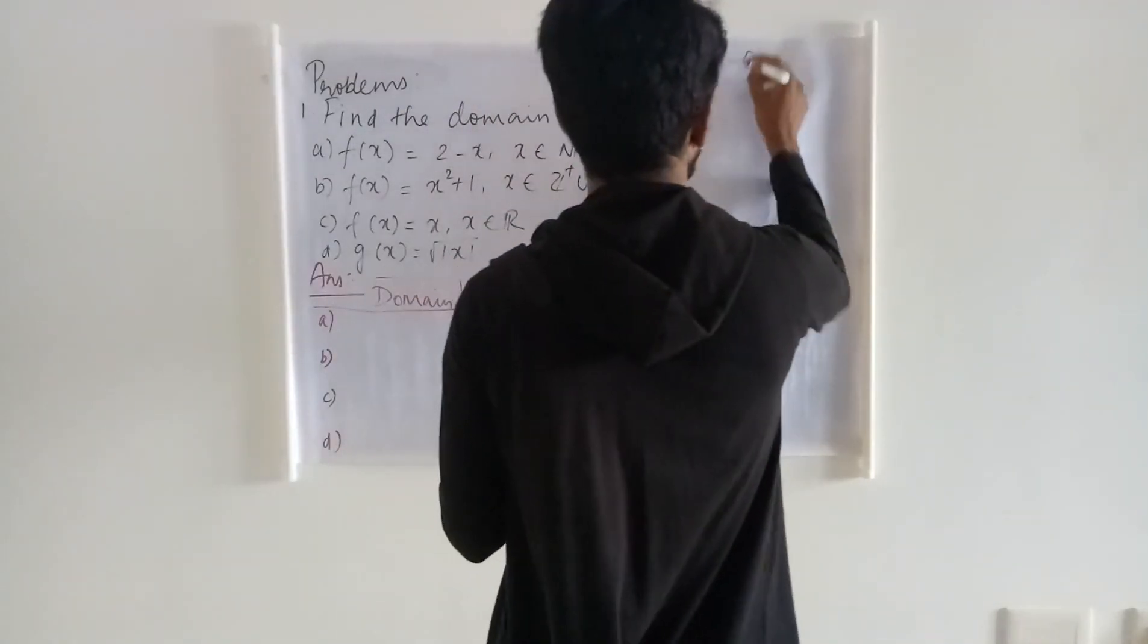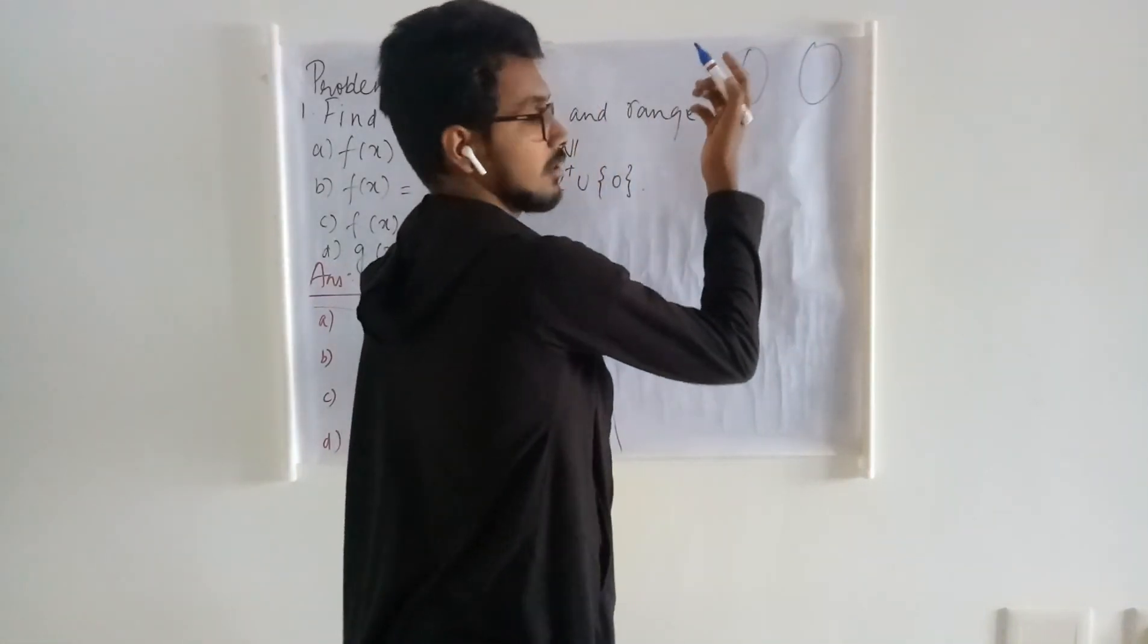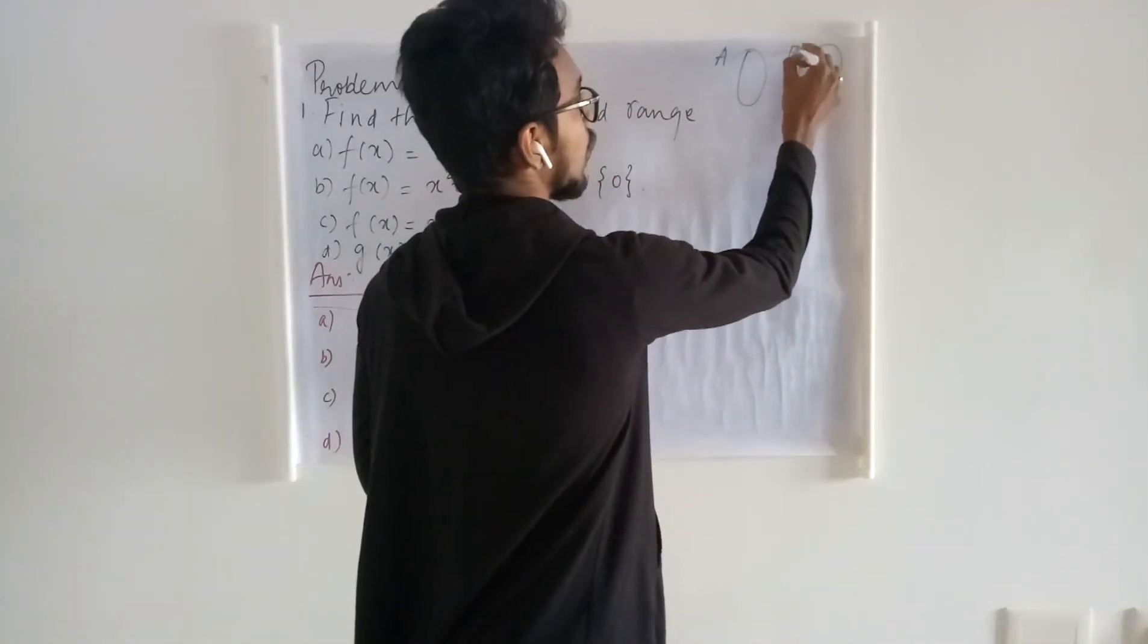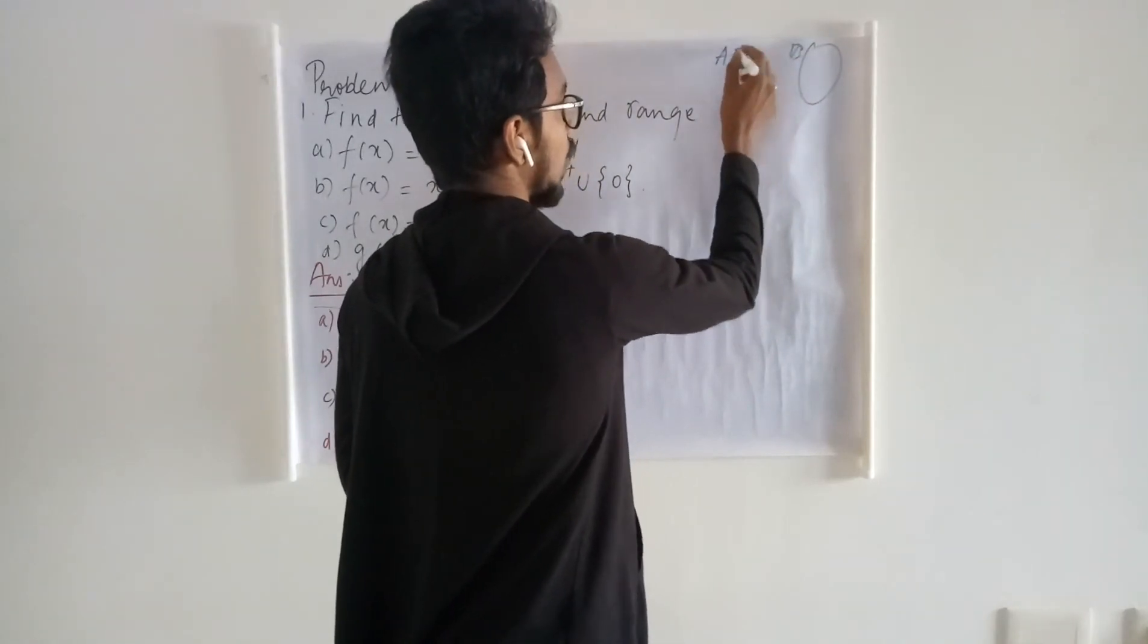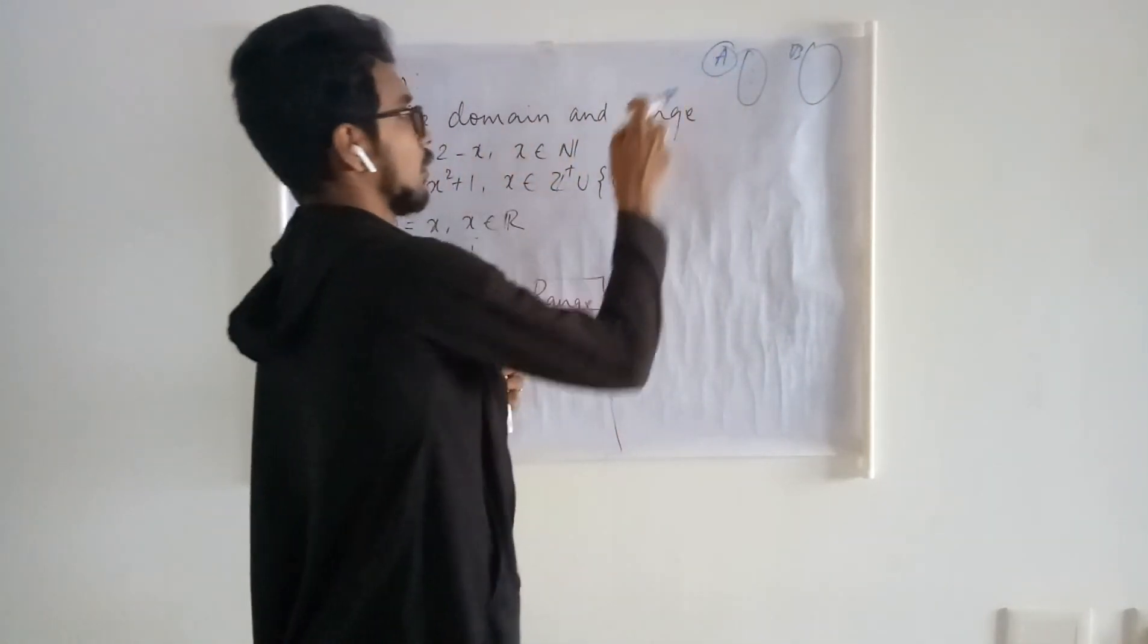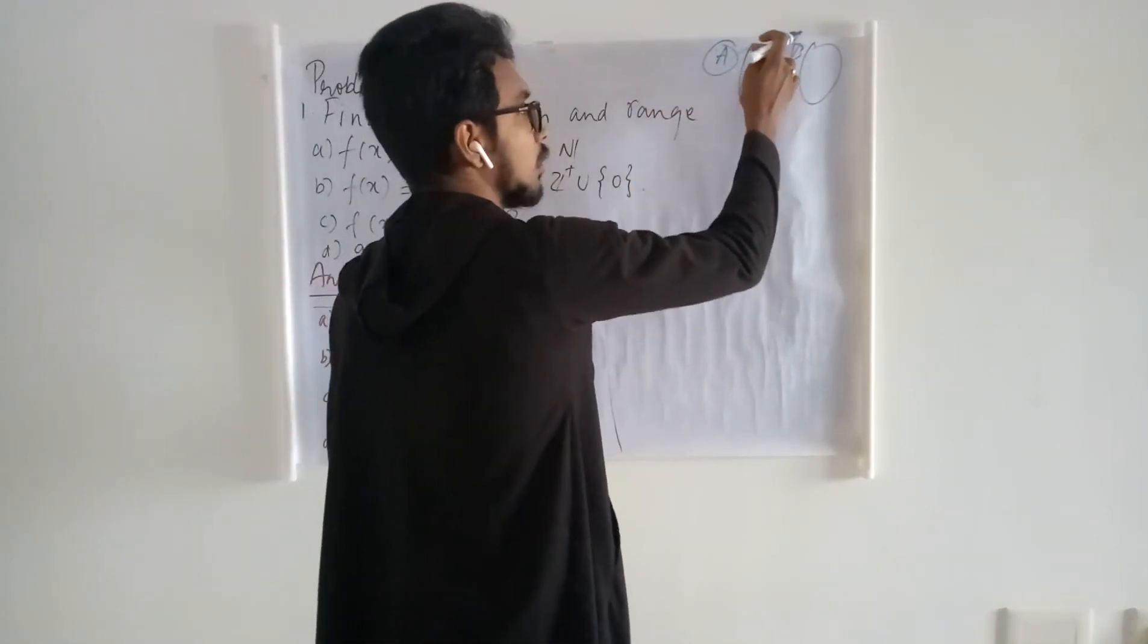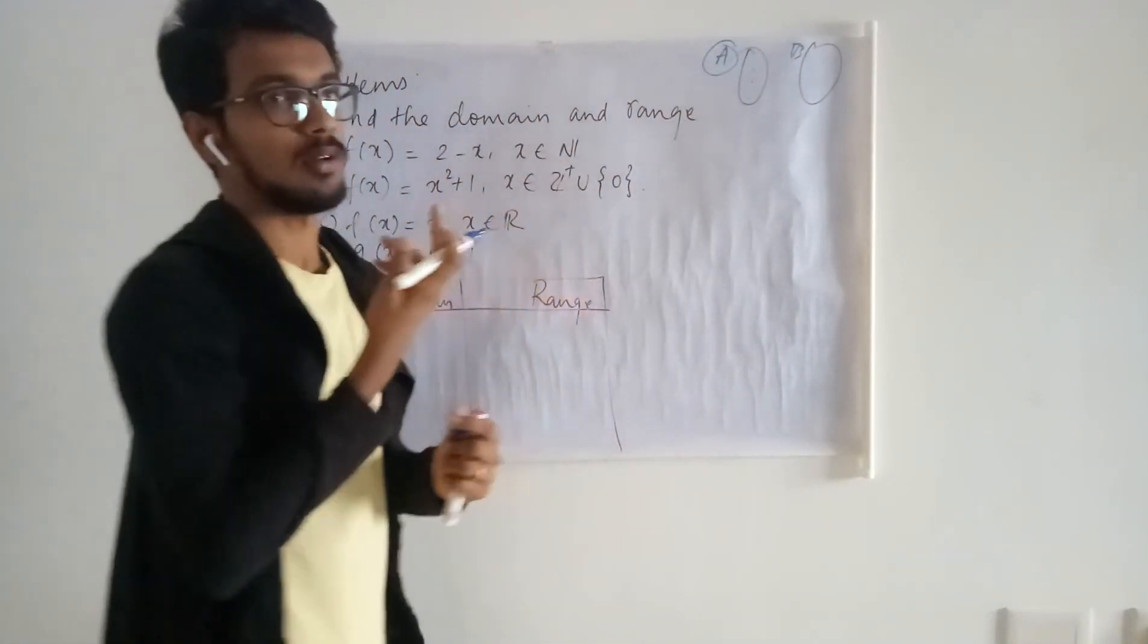Whenever we are given a mapping, that is a relation or association between two sets A and B, the values in A, that is the values in the domain. Here A is the domain. The values that are present in A are called the domain.